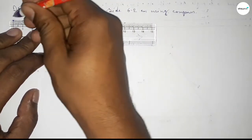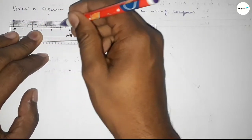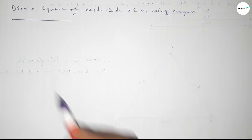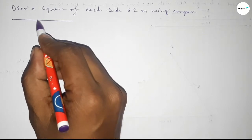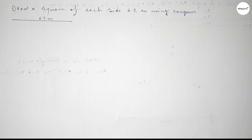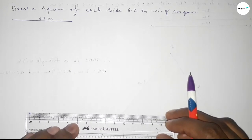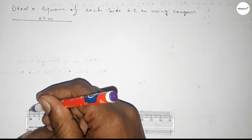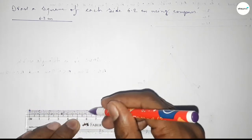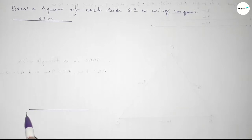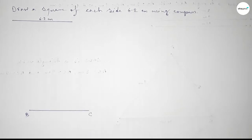First of all, we have to draw a line of length 6.2 centimeters: 0, 1, 2, 3, 4, 5, 6, 6.2. Then again we have to draw another line of length 6.2 centimeters: 0, 1, 2, 3, 4, 5, 6, 6.2. Taking point B here and point C here.